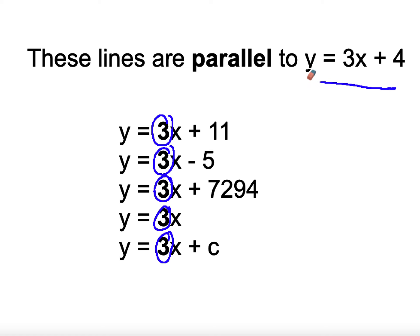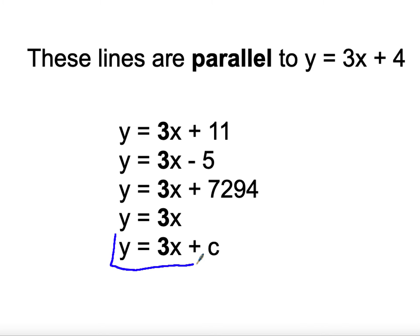So if I say find me a line parallel to y equals 3x plus 4, you can name any line at all — any of those would be totally fine. But probably the smartest answer is the general one: y equals 3x plus c, where c can be any value — fraction, decimal, positive, negative. Any line parallel to y equals 3x plus 4 fits the form y equals 3x plus c.